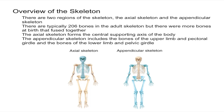The axial skeleton is a bit more important due to the fact that it protects some vital organs such as your brain and your heart.